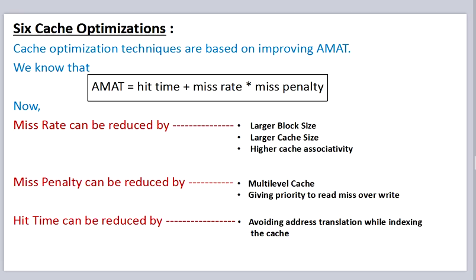Now we have 6 cache optimizations. Cache optimization techniques are based on improving average memory access time, which equals hit time plus miss rate times miss penalty. We can reduce average memory access time by reducing hit time, miss rate, and miss penalty. Miss rate can be reduced by larger block size, larger cache size, and higher cache associativity. Miss penalty can be reduced by multi-level cache and giving priority to read misses over writes. Hit time can be reduced by avoiding address translation while indexing the cache.